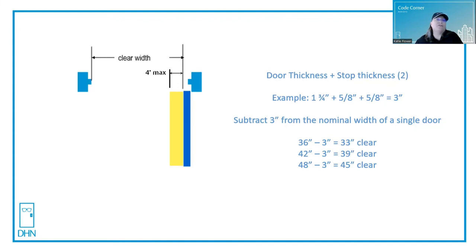Then you just subtract the three inches from the nominal width of a single door. So a 36 inch door actually gives us 33 inches clear, which exceeds the 32 inches that is required. A 42 inch door minus three would be 39 inches clear, and a four foot leaf, 48 minus three is 45.